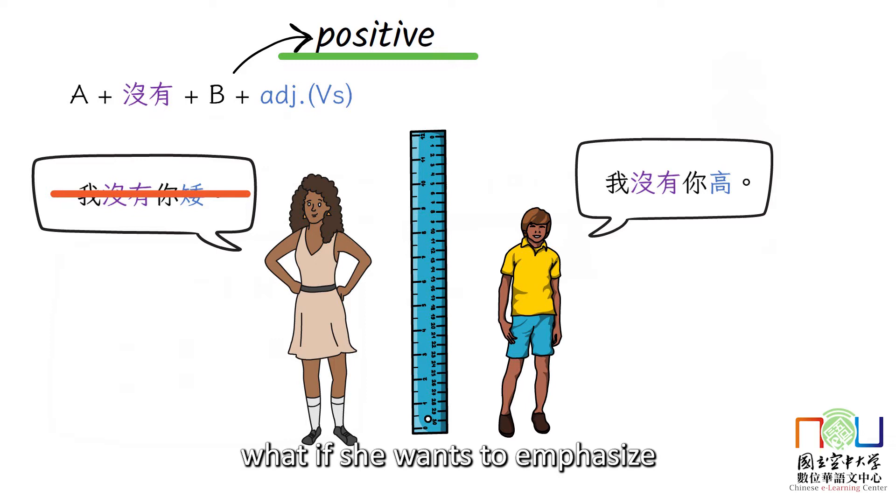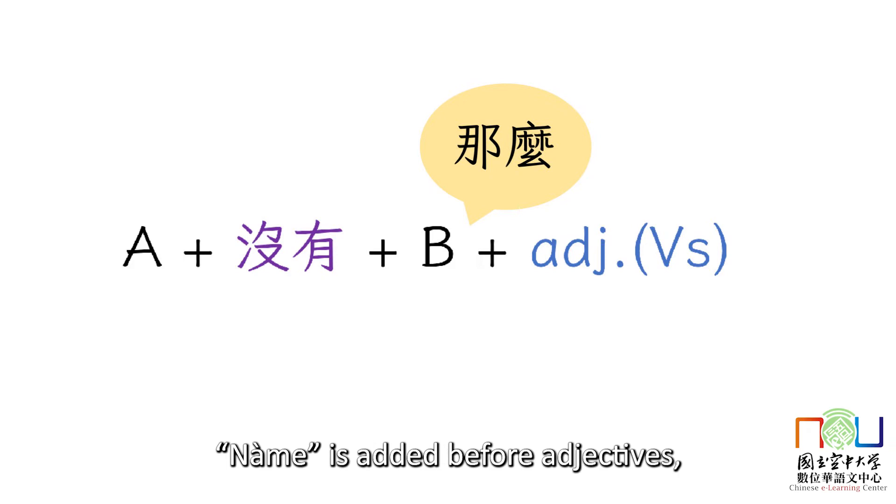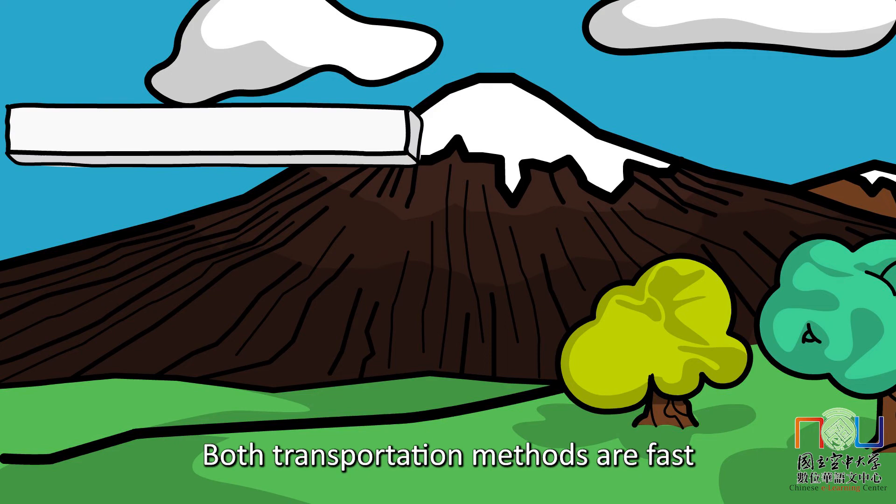Here is a question. What if she wants to emphasize that she's not that short? In this case, 没有 will be accompanied with 那么. 那么 is added before adjectives, no matter if they are positive or negative. Here is an example.